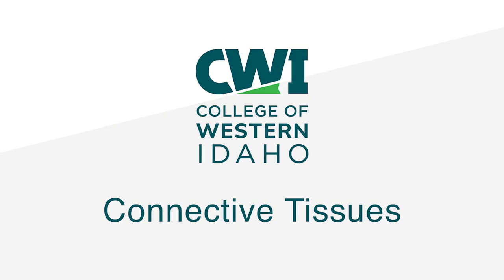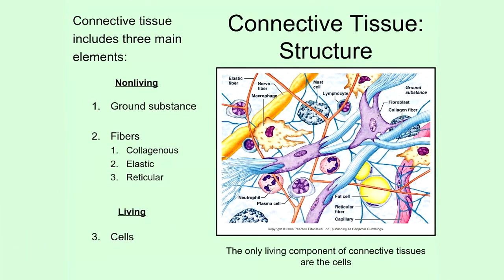In our last video, we started to talk about tissues in the body. There are four main tissue types: epithelial tissues, which we've looked at, muscle tissue, nervous tissue, and the fourth main category that we're going to talk about today, and that's connective tissue.